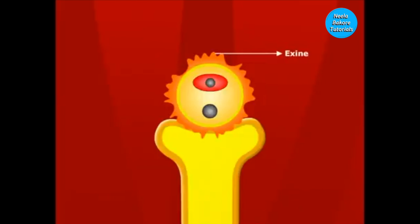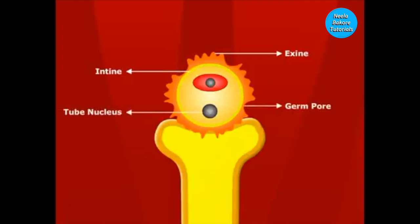The outer layer is known as exine, and it is made up of a substance called sporopollenin. The inner layer is thin and is known as entine. At some places, the exine is thin — these areas are known as germ pores, through which the pollen tube will emerge. The pollen grain has two cells: the smaller cell is known as the generative cell, which will divide to form two male gametes, and the larger cell is known as the tube cell, which will give rise to the pollen tube.